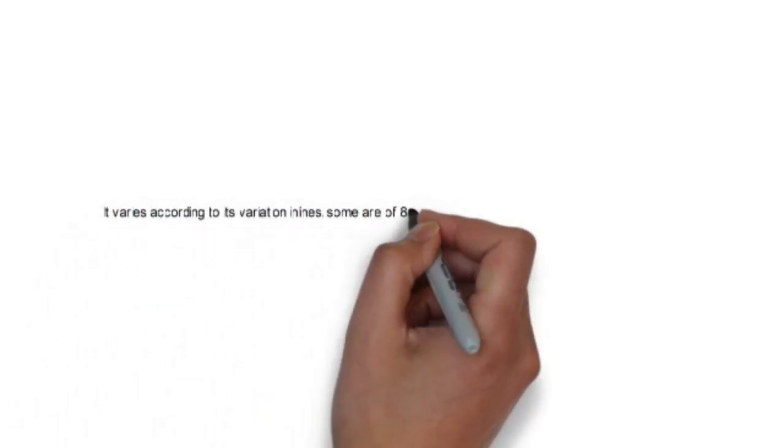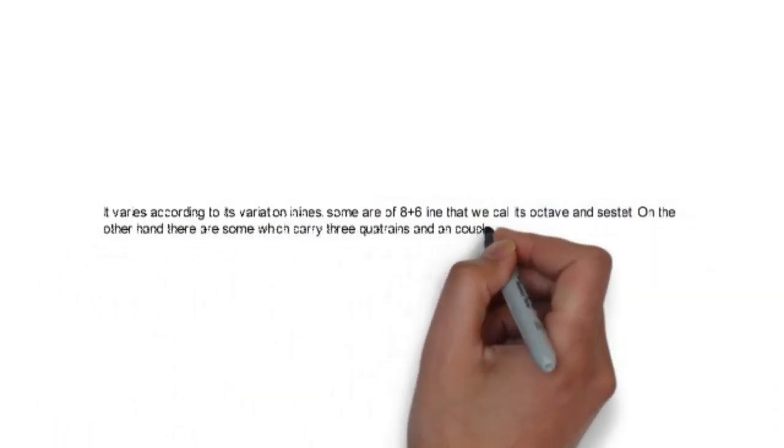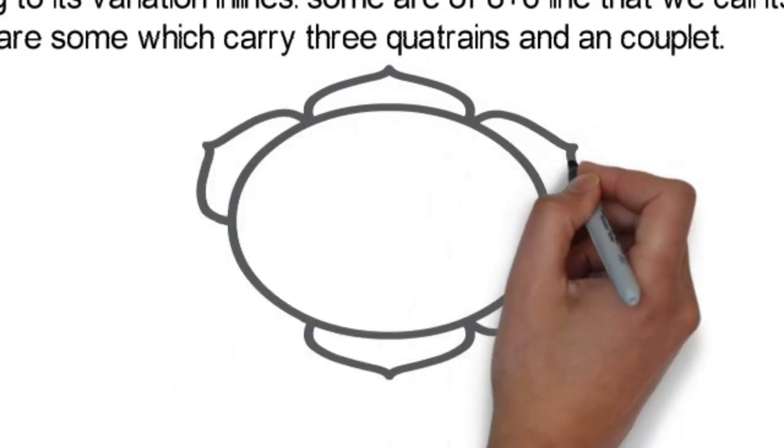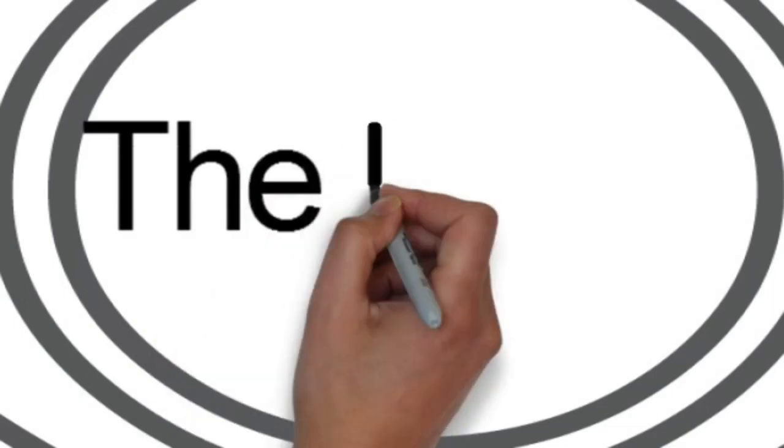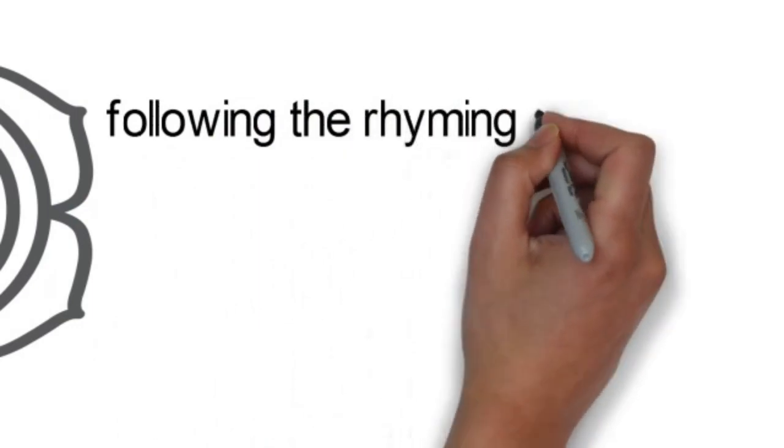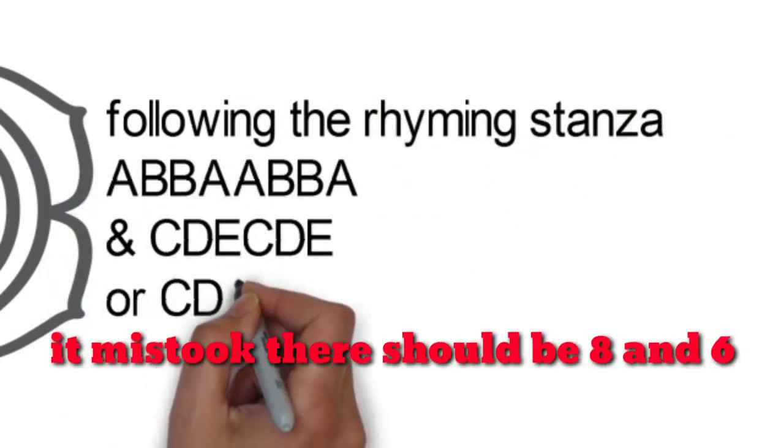But it varies according to some of the lines because some of has eight to six lines whereas the second one has three quatrains and a couplet. So in The Lotus poem we find we have the composition of the poem having eight and six lines, that's we call it's an octave and sestet.